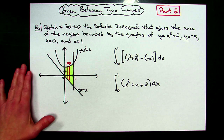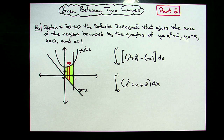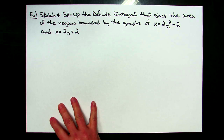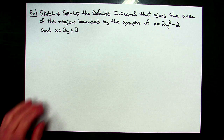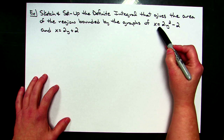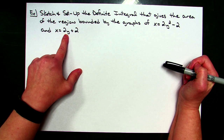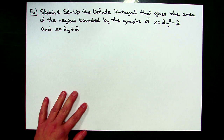That's the sketching and setting up of the definite integral for the first example. Now for my second example: sketch and set up the definite integral that gives the area of the region bounded by the graphs of x equals 2y squared minus 2, and x equals 2y plus 2. These equations are in terms of y.